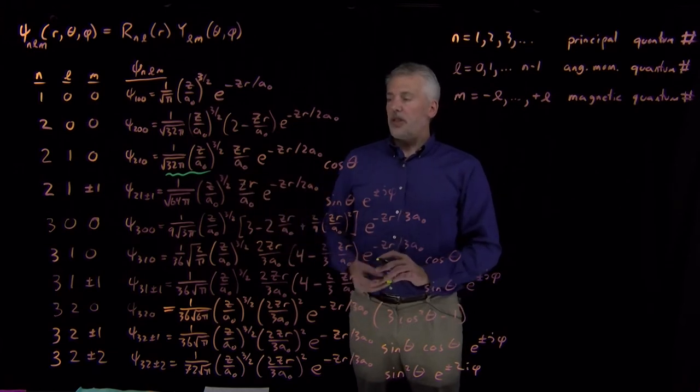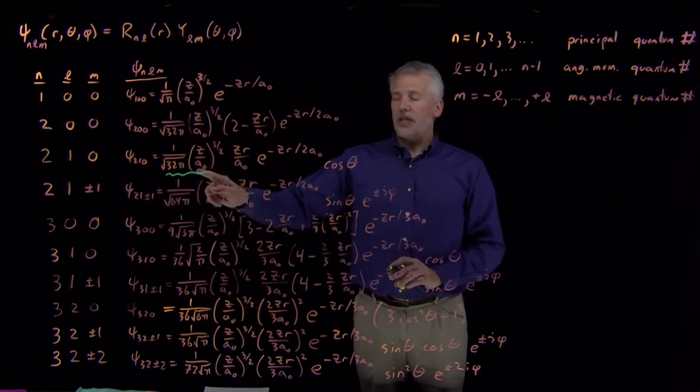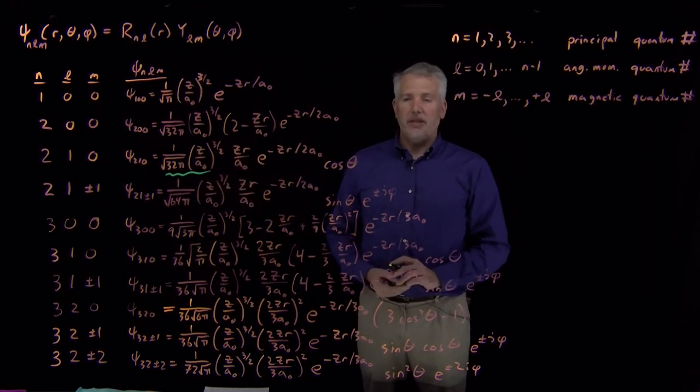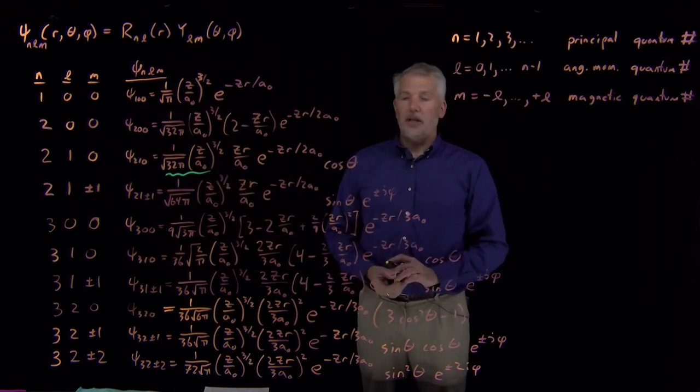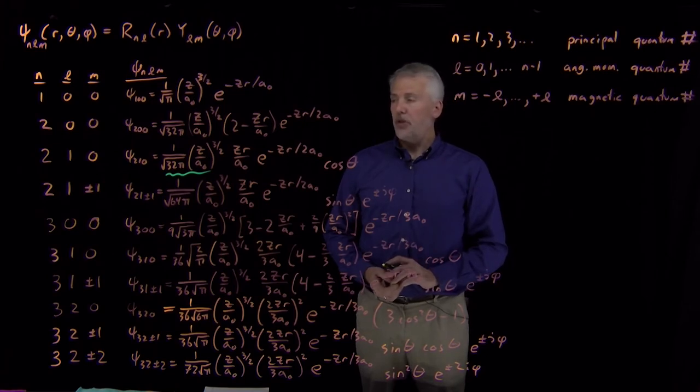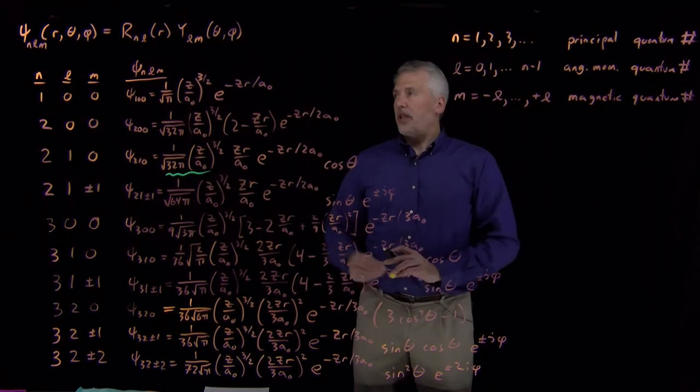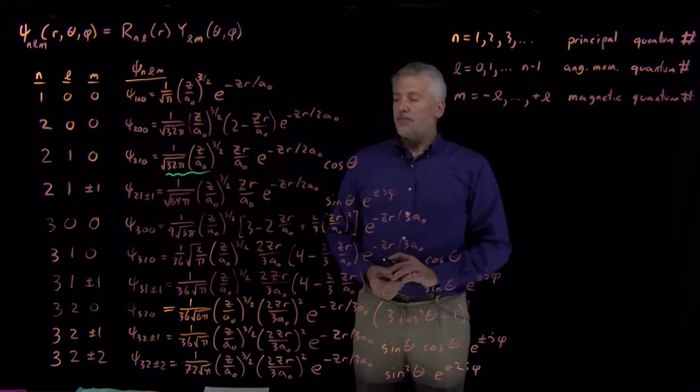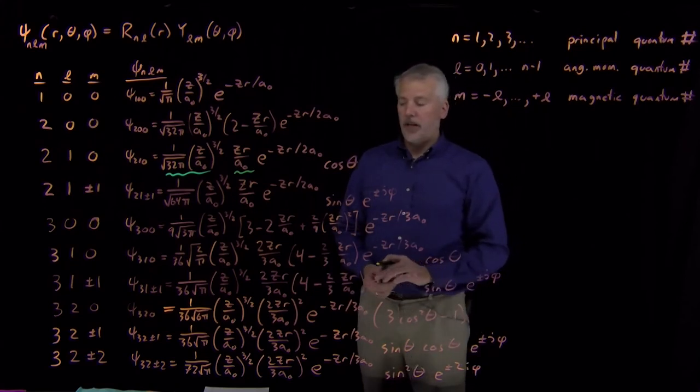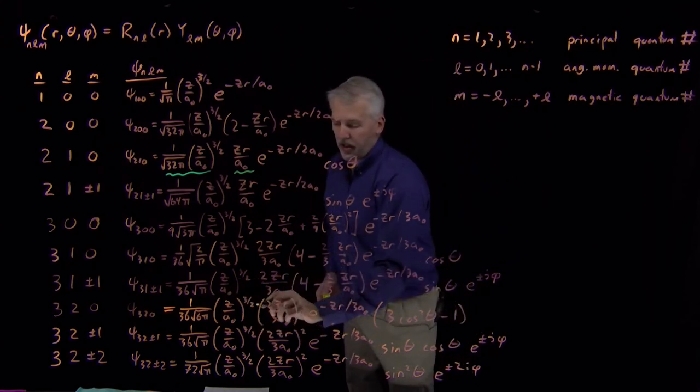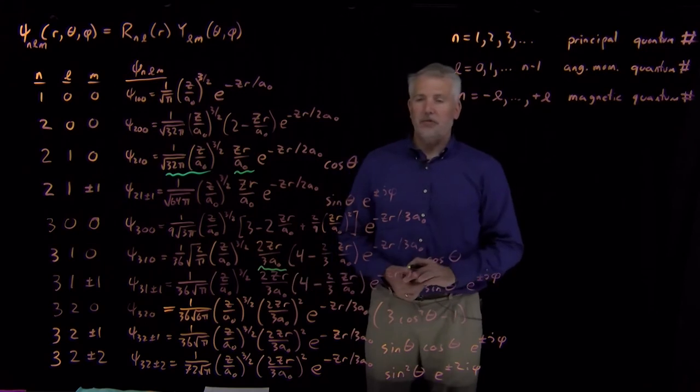Also notice that the normalization coefficient itself always includes the z over a nought to the three halves term. That's there primarily for unit reasons. The normalization coefficient needs to have units of one over length to the three halves so that the units of the wave function are appropriate. After the normalization coefficient, in the radial portion of the wave function, we may have some terms that look like z r over a nought, or maybe z r over a nought raised to, with some coefficients in front, raised to some power.